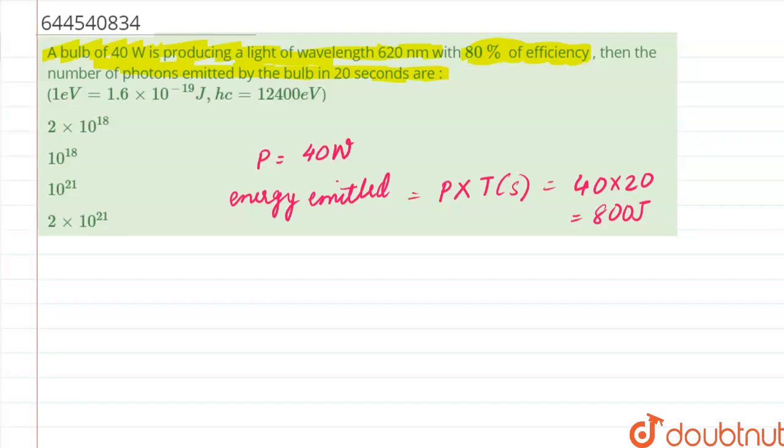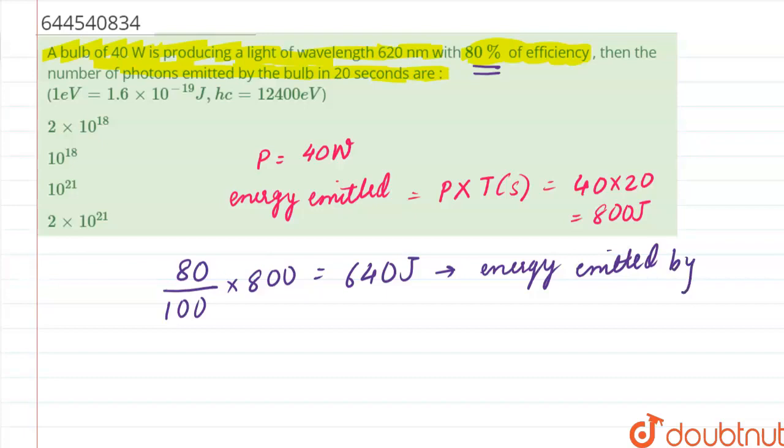Now the energy of photon emitted, since it is having 80% efficiency, it will be 80 divided by 100 into 800. This comes out to be 640 Joules. This is the energy emitted by bulb.